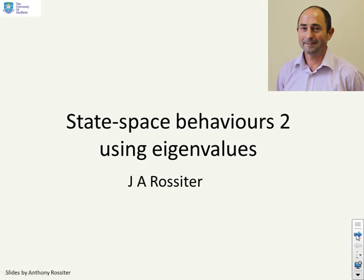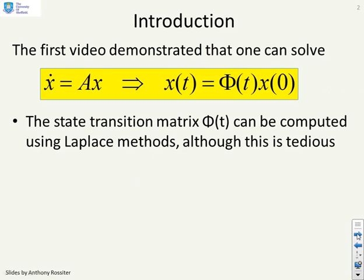This video is the second on state space behaviors and considers the role of eigenvalues. The first video demonstrated that you can solve x dot equals Ax by finding a state transition matrix phi of t.